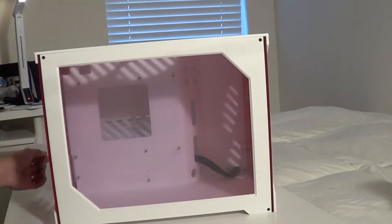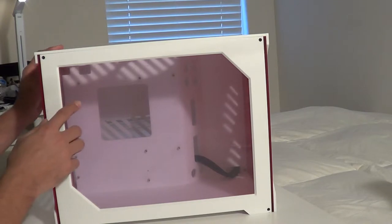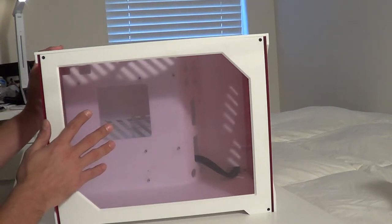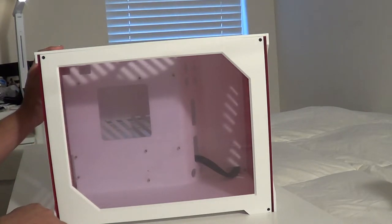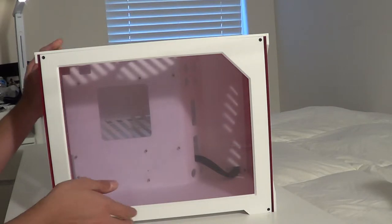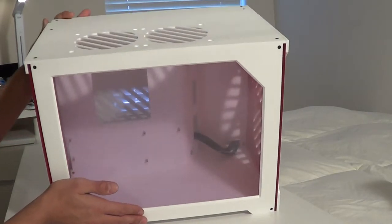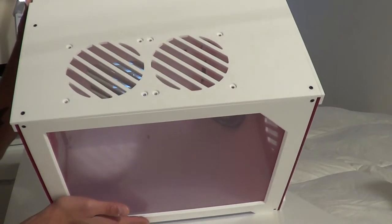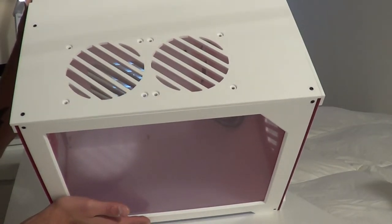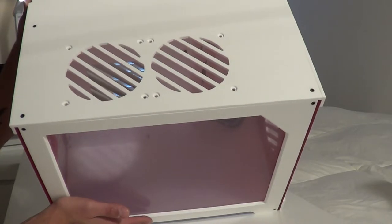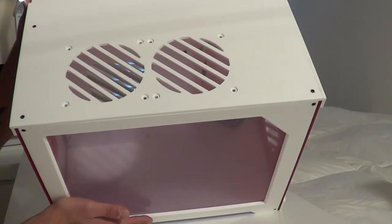Coming around to the front, now the reason this window looks so dark is because I currently have the protective film still on it. I have not removed that. So, coming to the top, as you can see, we have support for two 120mm fans, maybe combined with a 120 or a 240mm radiator.